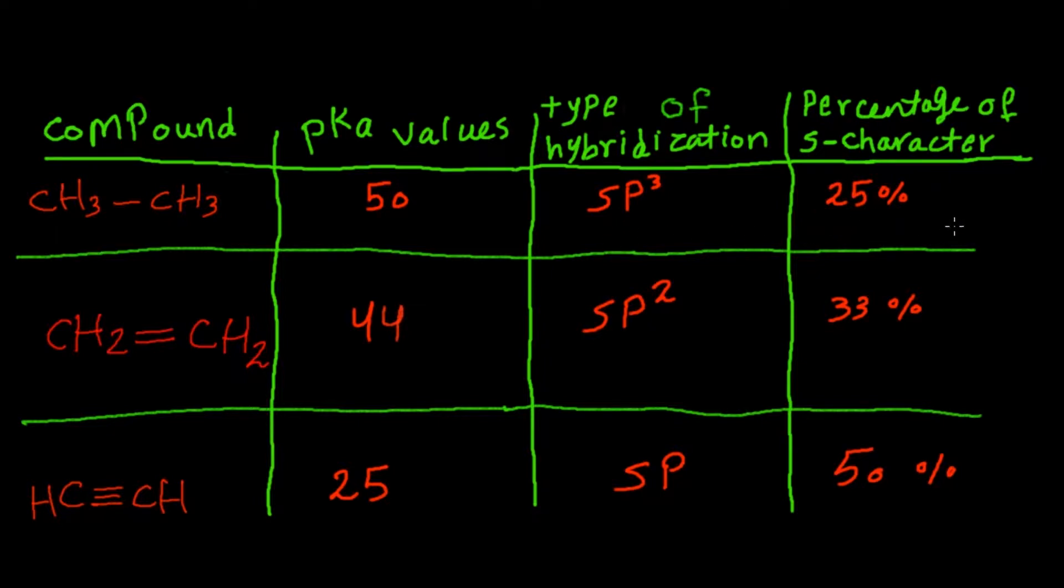This is because there is one s orbital over one s plus three other p orbitals, so four total orbitals. The fraction here equals 25 if we multiply that number by 100.